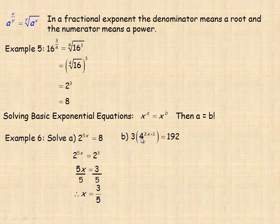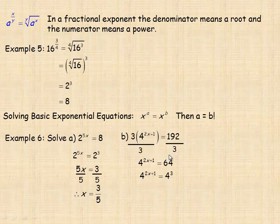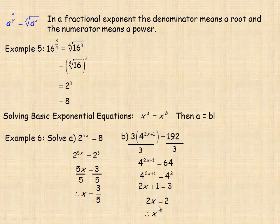In example six b, three times four to the two x plus one equals 192. First divide both sides by three — the threes cancel and 192 divided by three is 64. Now write 64 as a power of four: 64 is four cubed. With matching bases, set the exponents equal: two x plus one equals three. Subtracting one gives two x equals two, so x equals one.